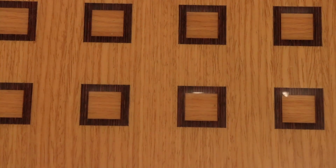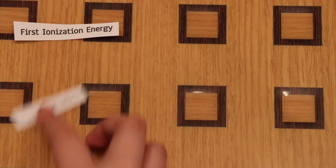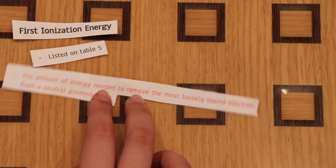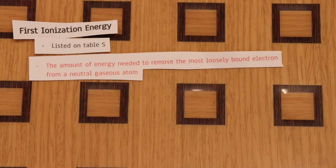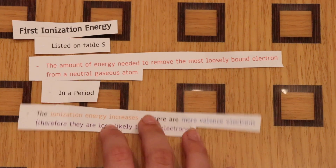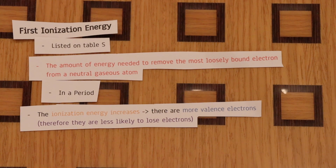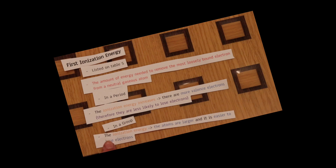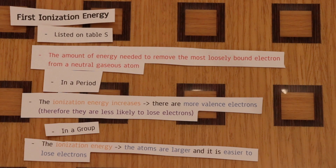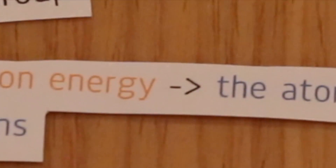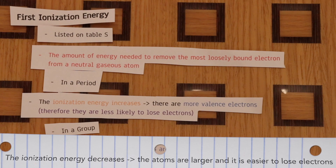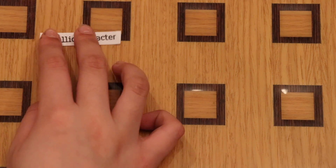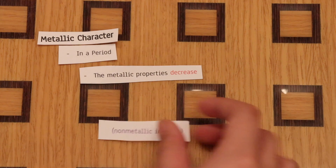First ionization energy, also just called ionization energy, is listed on Table S. It is the amount of energy needed to remove the most loosely bound electron from a neutral gaseous atom. In a period, ionization energy increases because there are more valence electrons, making atoms less likely to lose them. In a group, ionization energy decreases because the atoms are larger and it's easier to lose electrons.